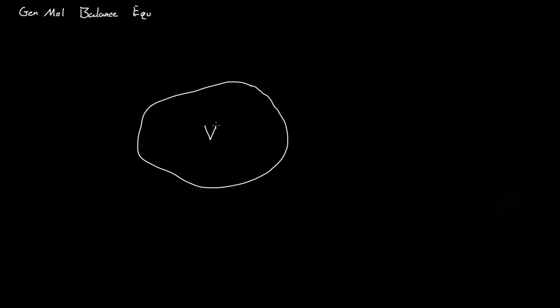This is a quick video over the general mole balance equation. Let's say we have a system that has volume V, with a feed line and a product line. We have a very basic reaction A going to B — that's the reaction going on in the system.